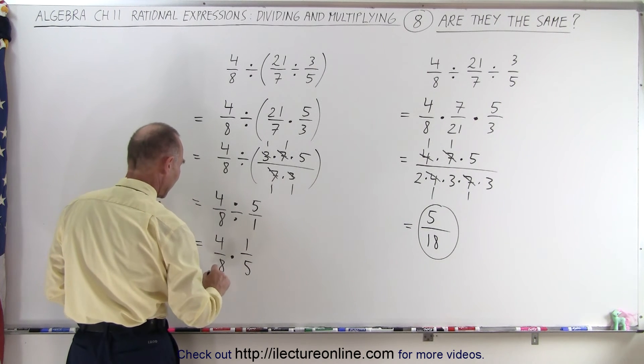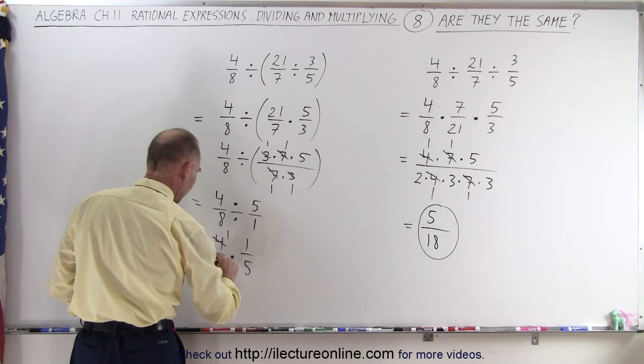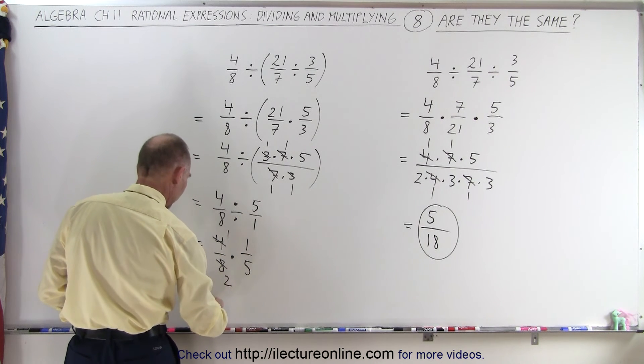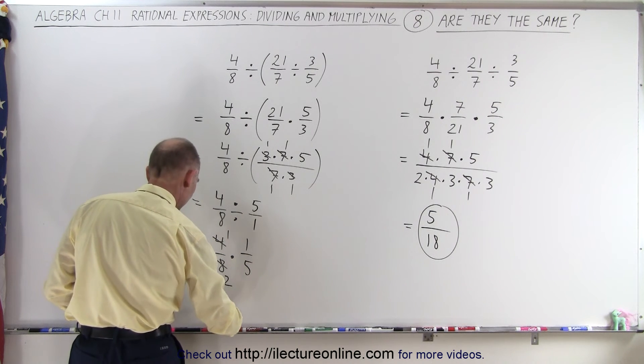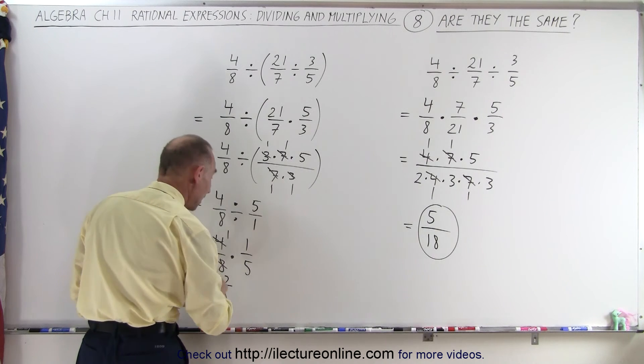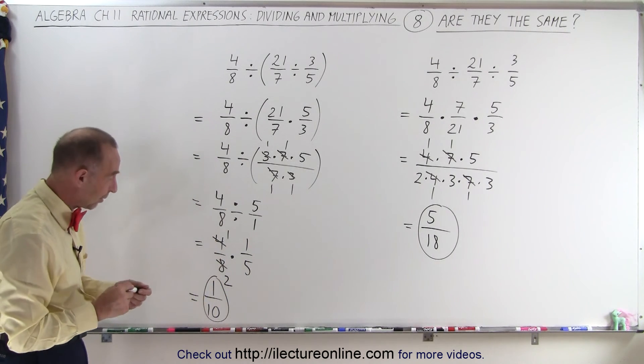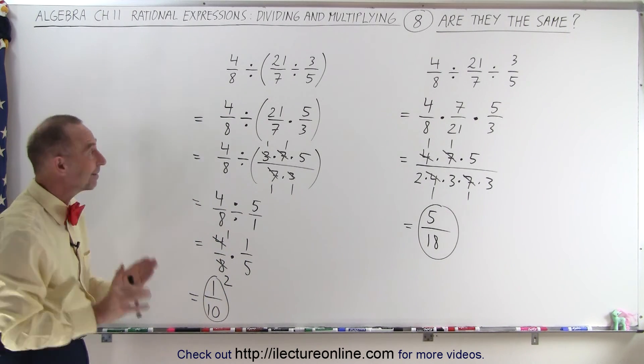And then you can see that the 4 and the 8 cancel out, so the 4 becomes 1, the 8 becomes a 2, and this is equal to 1 divided by 10. Notice we get a very different result. They are not the same.